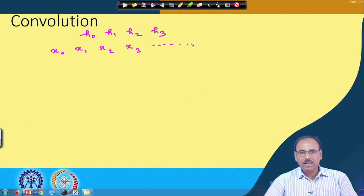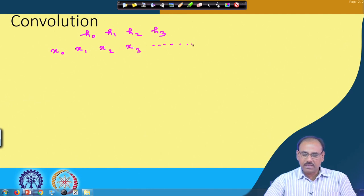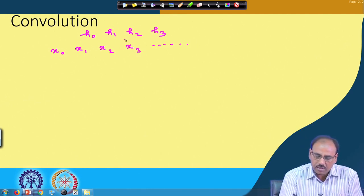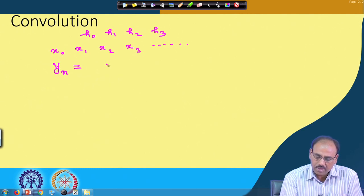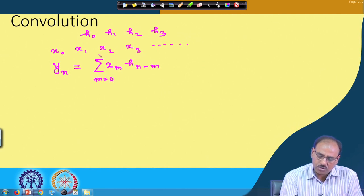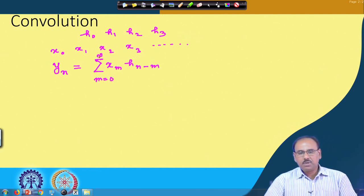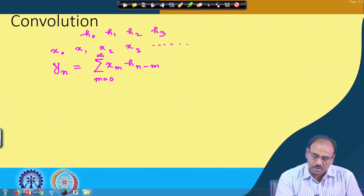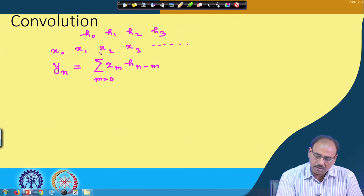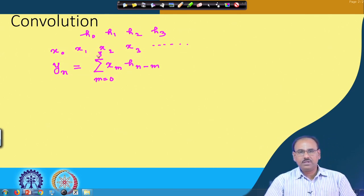This is the input sequence: at time instant 0 you have input x0, at time instant 1 you have x1, at time instant 2 x2, and so on. Given this input signal and impulse response, the output of the system is y[n] = Σ x[m]h[n−m] where m varies from 0 to infinity, and in this finite impulse response case m varies from 0 to 3.